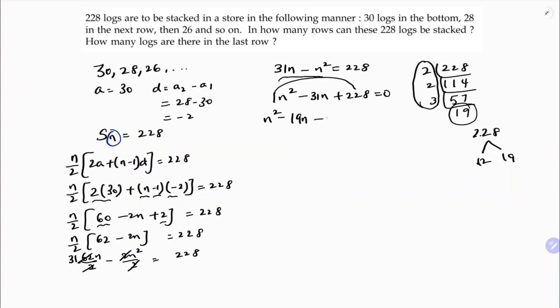So n² minus 19n minus 12n plus 228 equals 0. So here in the first two terms I can take n common, n minus 19, in the next two terms minus 12, n minus 19 equals 0. So because 12 into 19 is 228, n minus 19 into n minus 12 equals 0.